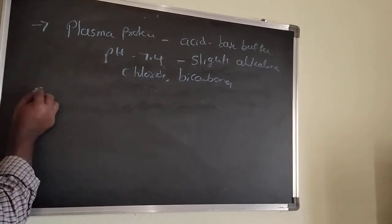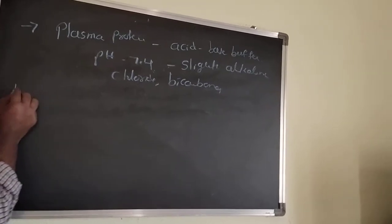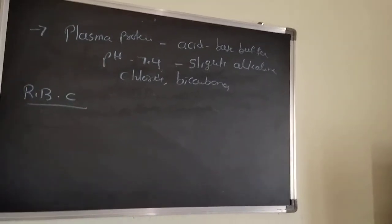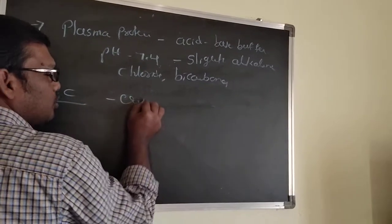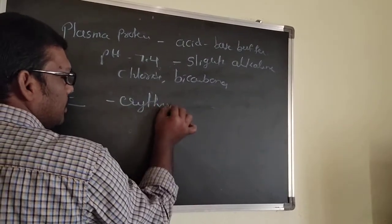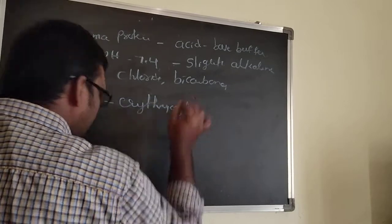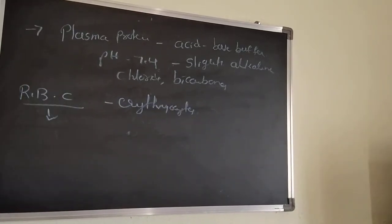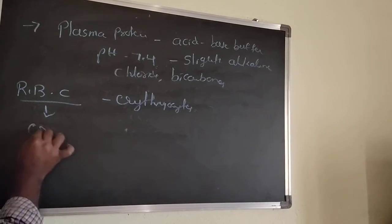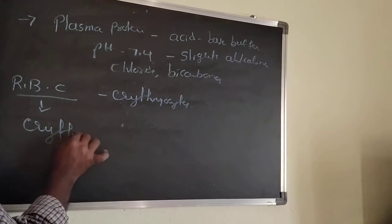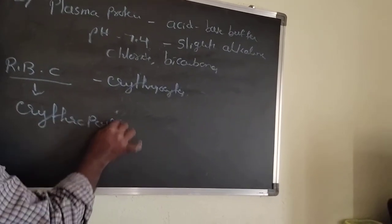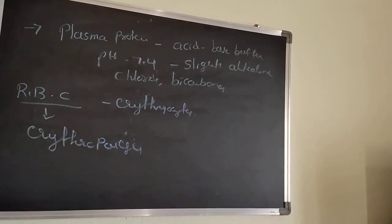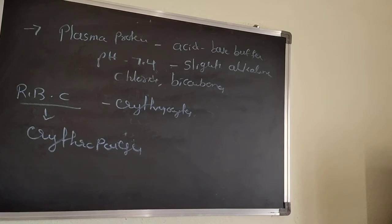Now we can go for the formed elements. The first one is RBC — red blood cells, also called erythrocytes. The formation of RBC is called erythropoiesis. Poiesis indicates formation, so the process of formation of RBC is called erythropoiesis.